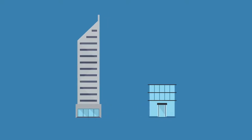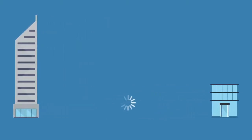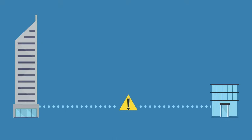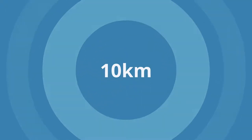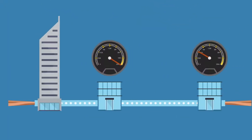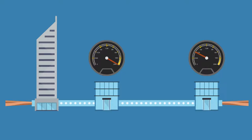The problem is, the further apart the customer and the central office equipment are, the more limited the options they can offer you. Technology has its limits — some cables can only work effectively within a 10km radius. Take a copper wire: speed decreases as distance increases. This is why some central offices will refuse business from customers that are far away.